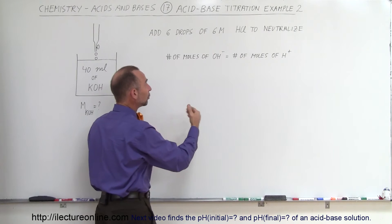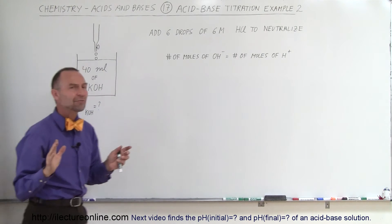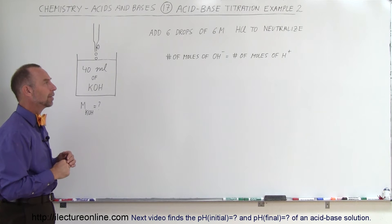the number of moles of the hydroxide ion that was in there is going to equal the number of moles of the hydrogen ion that we've added, and it will be very close to 100%. How do we do that?